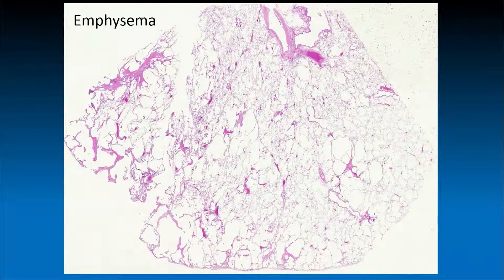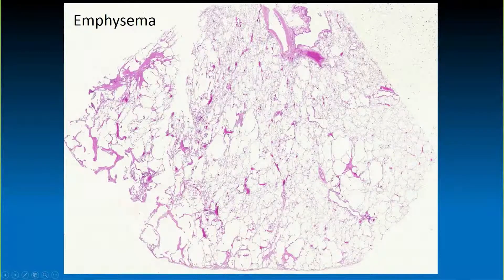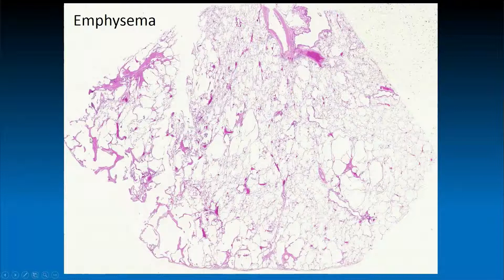In patients with emphysema, a more striking degree of variation may be seen in the airspace size. As can be seen here, there are areas of the lung that have relatively small and preserved alveolar structures, and other areas where the alveolar structures are markedly enlarged and have quite an irregular shape. You can also appreciate some degree of alveolar septal fibrosis, which is quite typical in this scenario.